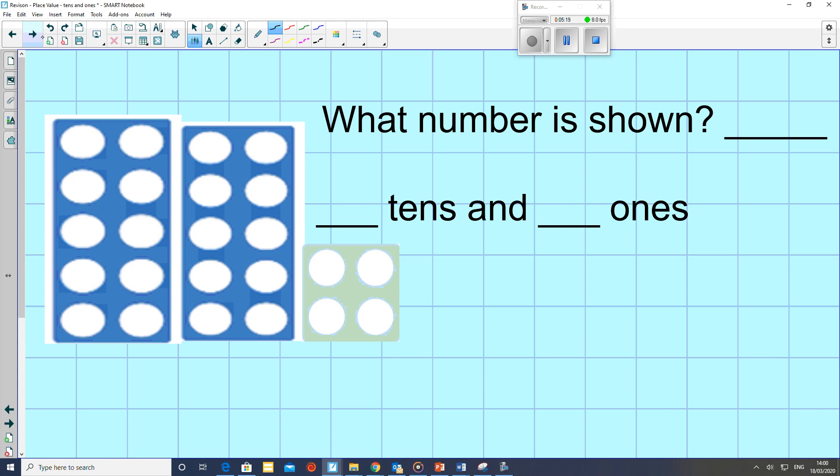So let's just double check that again. If you're ever unsure, you can check it by counting the circular holes: 1, 2, 3, 4, 5, 6, 7, 8, 9, 10. So 1 blue shape is 10. So if that's 10, I have another blue shape here. That is also 10. So I've got a 10 and another 10. And then I have 1, 2, 3, 4. I have 4 ones.